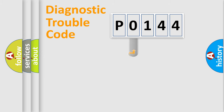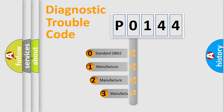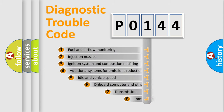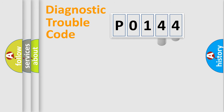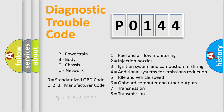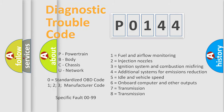This distribution is defined in the first character of the code. If the second character is expressed as zero, it is a standardized error. In the case of numbers 1, 2, or 3, it is a more specific car-specific error. The third character specifies a subset of errors. This distribution is valid only for the standardized DTC code, and only the last two characters define the specific fault of the group.